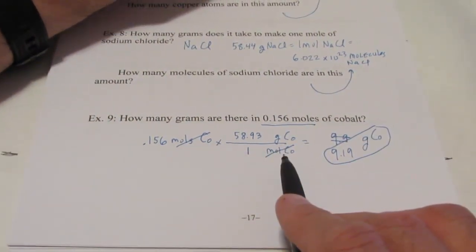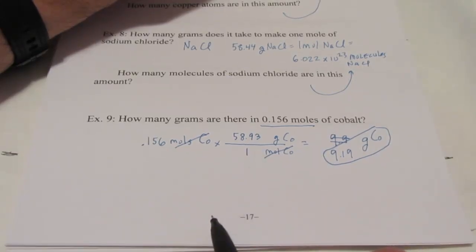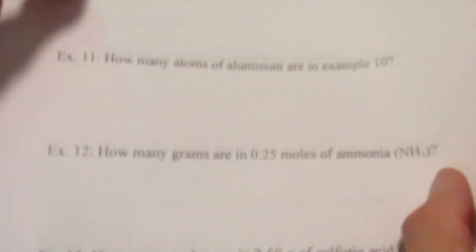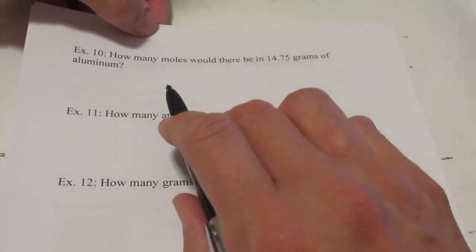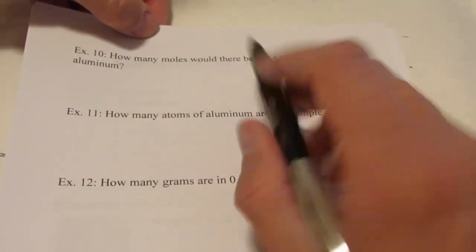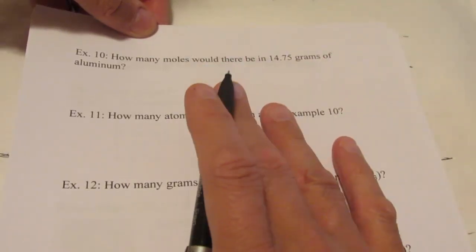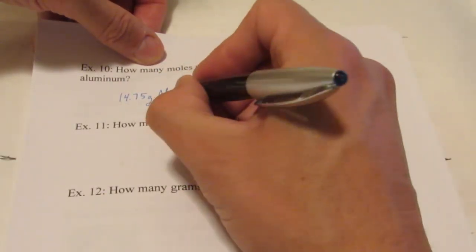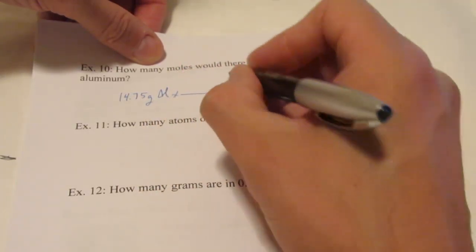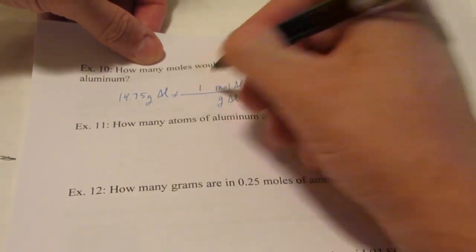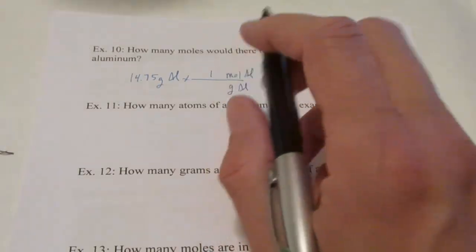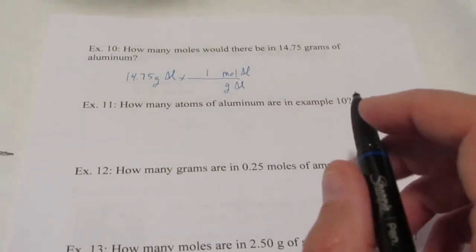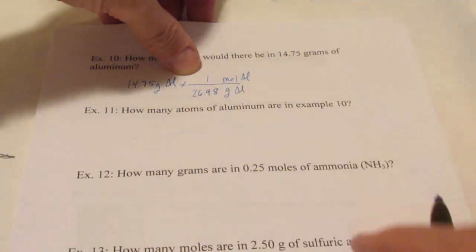Now, if I wasn't doing this for cobalt, if I was doing it for another element, I would need to look up its atomic mass. Alright, let's do a bunch more, shall we? Let's go backwards this time. A moment ago, I started with moles and had you convert to grams. This time, I'm going to start with grams and have you convert to moles. No big deal. So I'm going to give you 14.75 grams of aluminum, Al. Now, we're going to put grams of aluminum on the bottom and moles of aluminum on top. Put a 1 by mole. So now we need to look up the atomic mass for aluminum and it says 26.982. So we're going to go with 26.98.